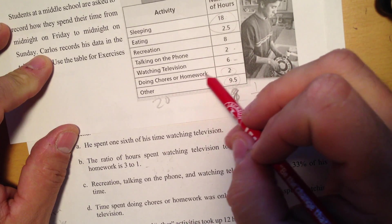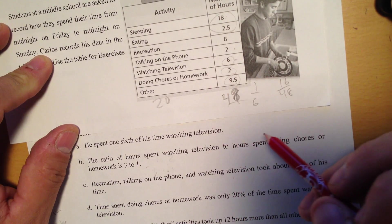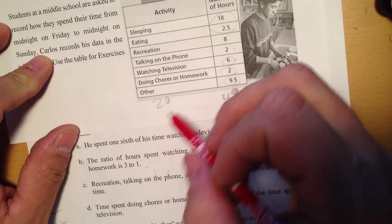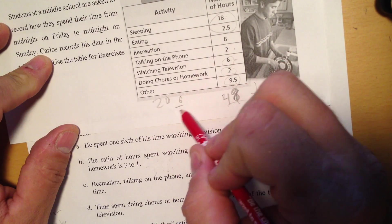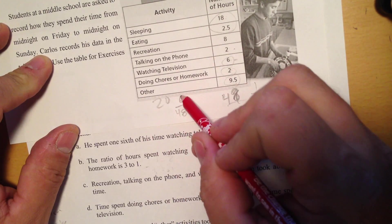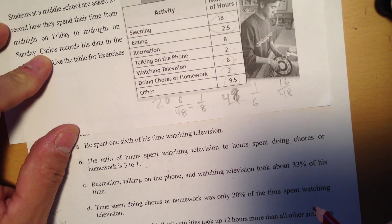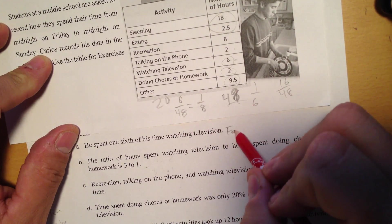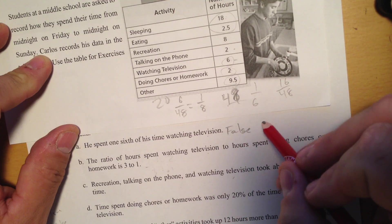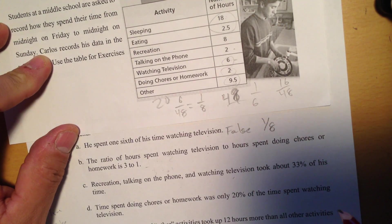Time watching television was 6 hours. So that is supposed to be one-sixth. If I put 6 over 48 and I reduce that, 6 does go into 48, it goes into it 8 times. It should be one-eighth. So this is a false statement, and I'm going to correct it by saying one-eighth of his time.